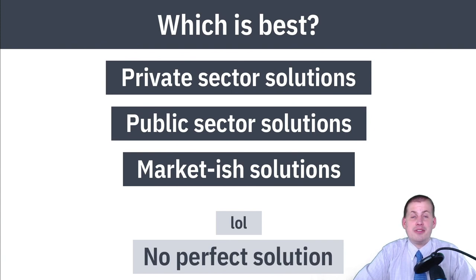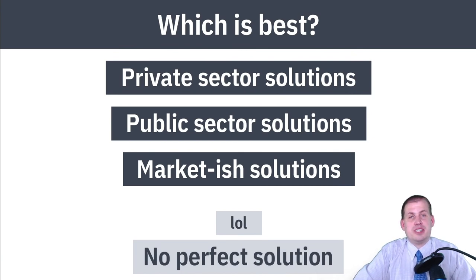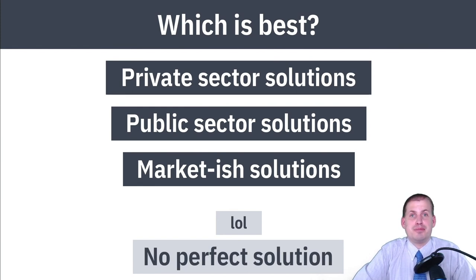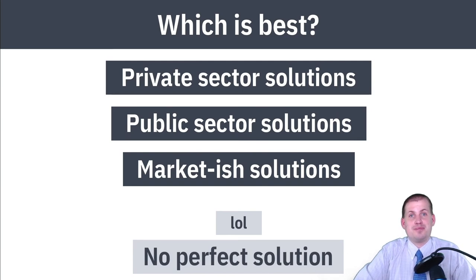There's no perfect solution to fixing externalities. For climate change, just relying on the invisible hand won't do it; Coasian bargaining won't do it; Pigouvian taxation probably won't do it; cap and trade alone probably won't do it. It's going to require everything at once — good luck with politics. Every solution imposes costs on somebody, and people with more power typically benefit from different arrangements, making environmental policy a really sticky, ongoing debate.